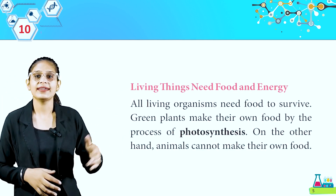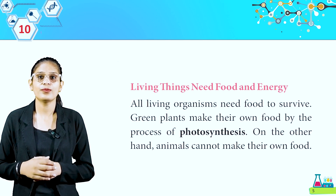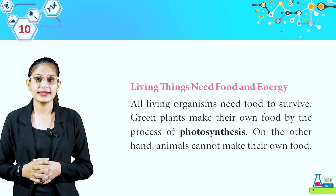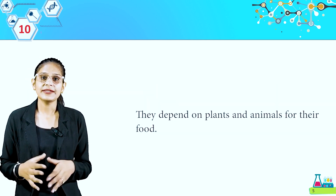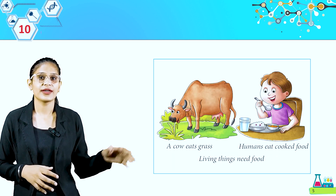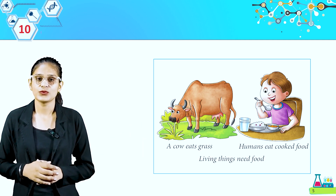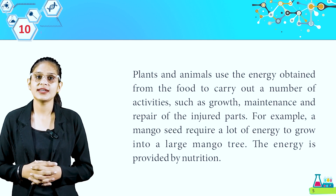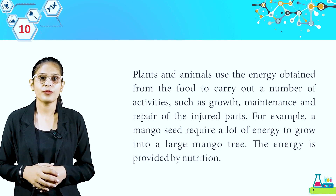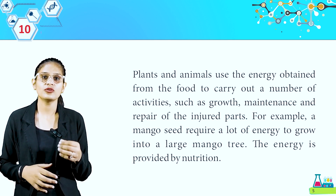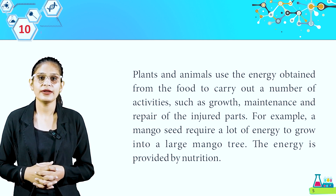Living things need food and energy. All living organisms need food to survive. Green plants make their own food by the process of photosynthesis. On the other hand, animals cannot make their own food — plants apna food khud banate hain. Animals depend on plants and animals for their food. Look at these pictures: a cow eats grass, humans eat cooked food. Plants and animals use the energy obtained from food to carry out activities such as growth, maintenance and repair of injured parts. For example, a mango seedling requires a lot of energy to grow into a large mango tree. The energy is provided by nutrition.